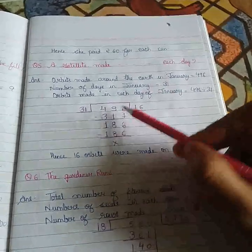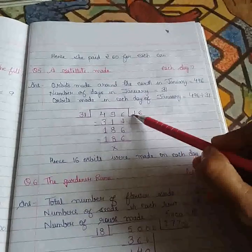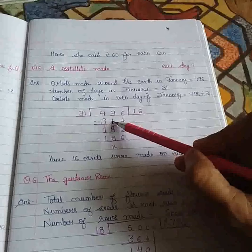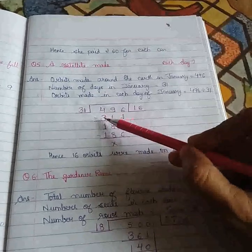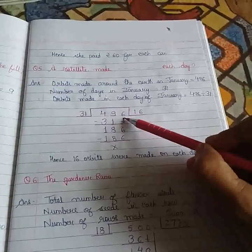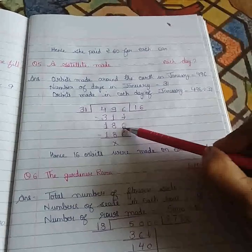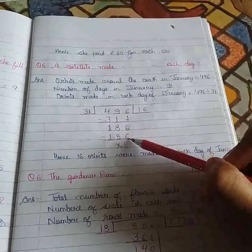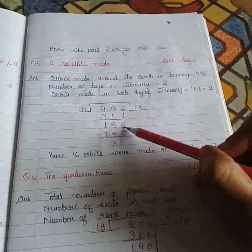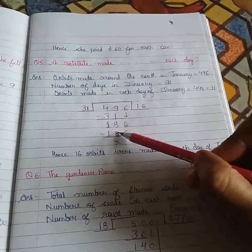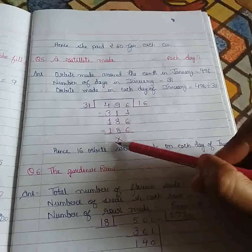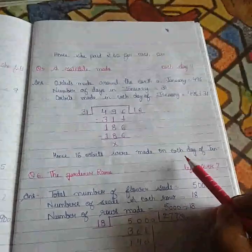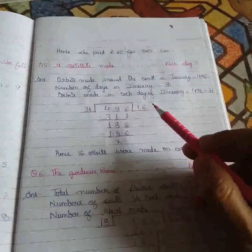So let's start. 31 times 1 is 31. Now subtract it out: 9 minus 1 is 8 and 4 minus 3 is 1. Take this 6 also down. This is 186 now. So 31 times 6 is 186. Now subtract: 6 minus 6 is 0, 8 minus 8 is 0, and 1 minus 1 is 0. That is 16 rounds per day in the January month this satellite is taking.